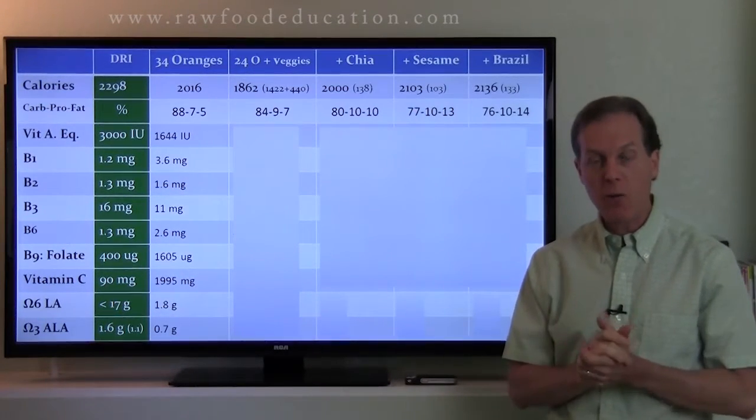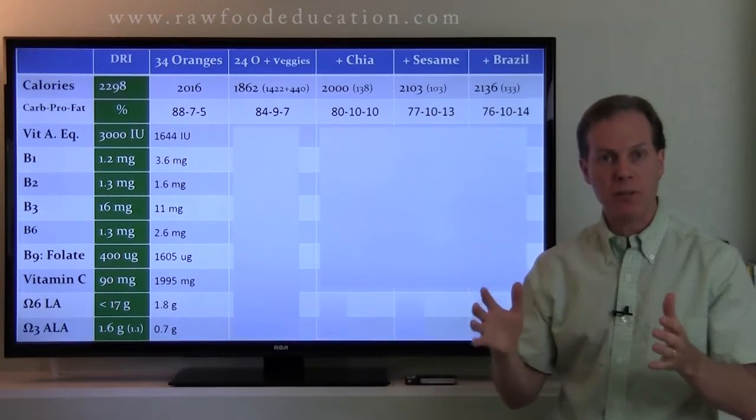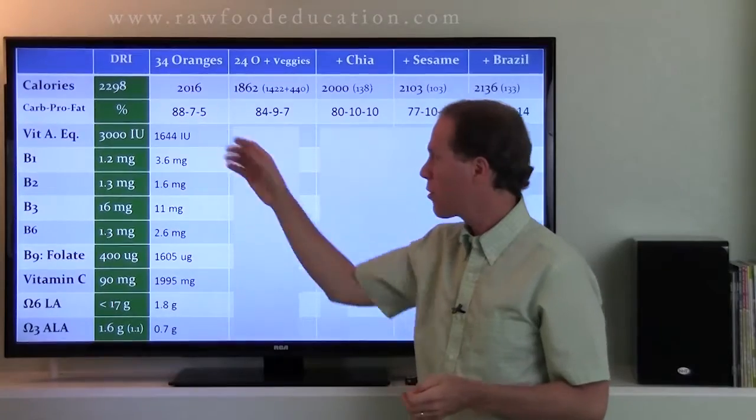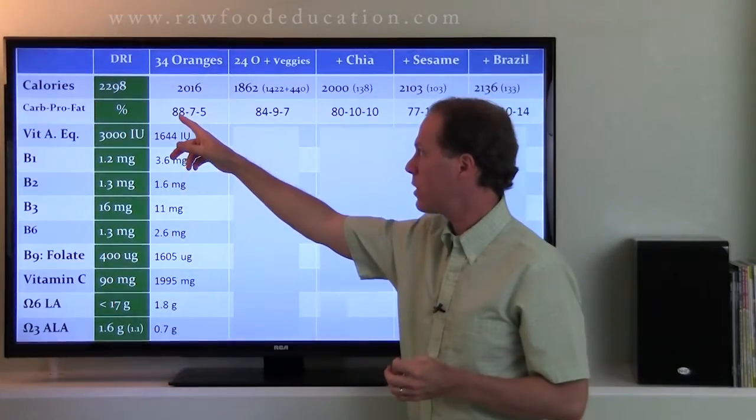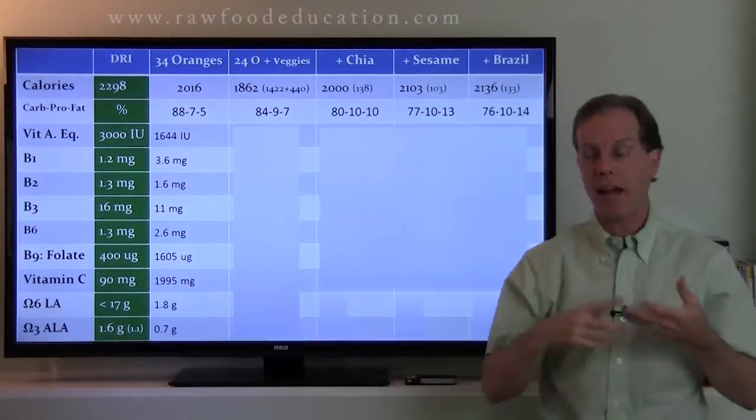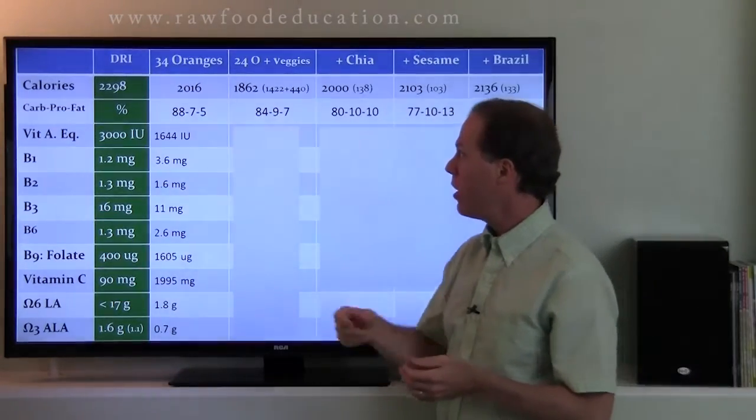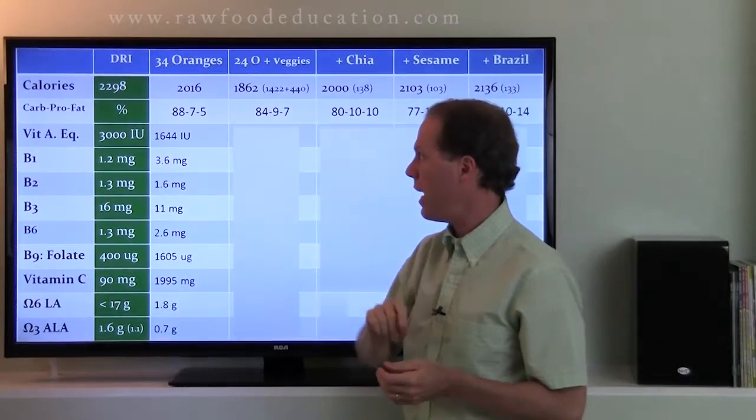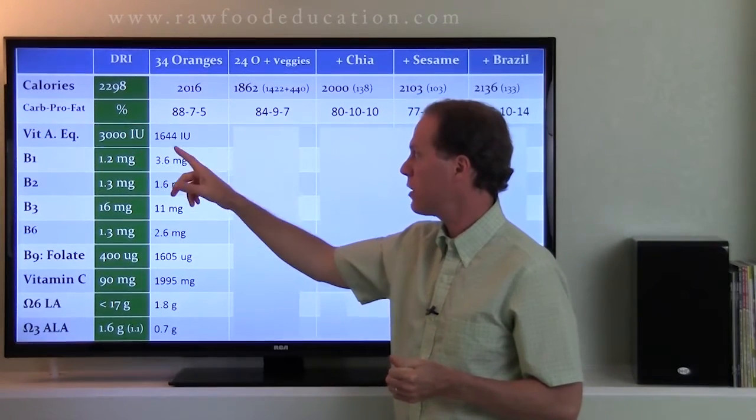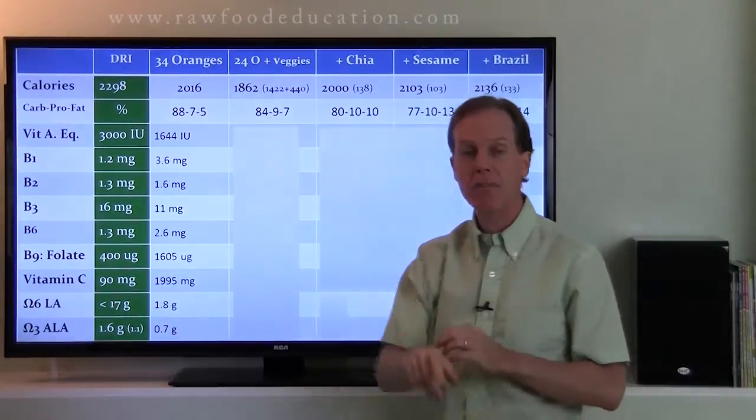So let's start out with a day's worth of calories from just oranges, 34 oranges, like we saw the first time: 88-7-5 for carbohydrates, protein and fat respectively. Now how did we do for vitamin A? Well they say you need 3000 international units, I got about half that, about 1600 from 34 oranges.